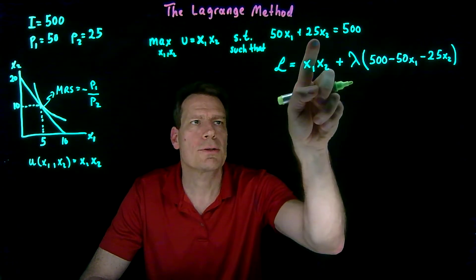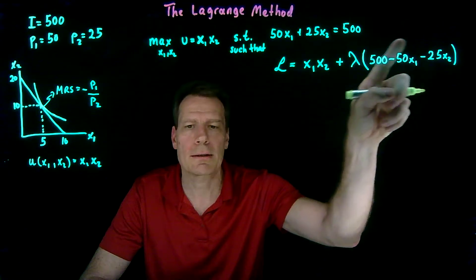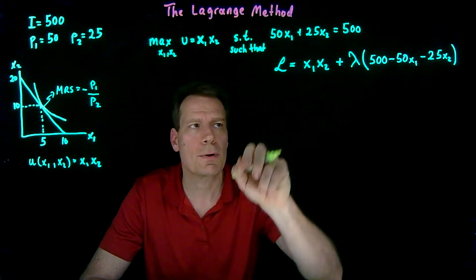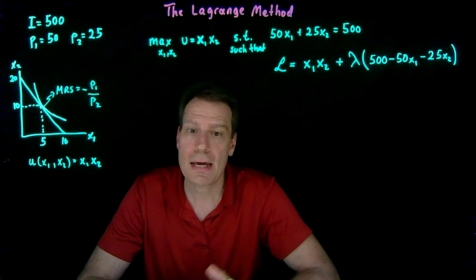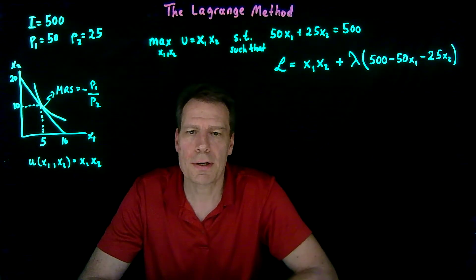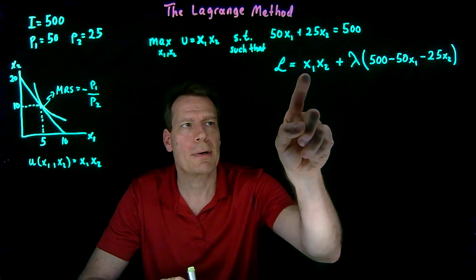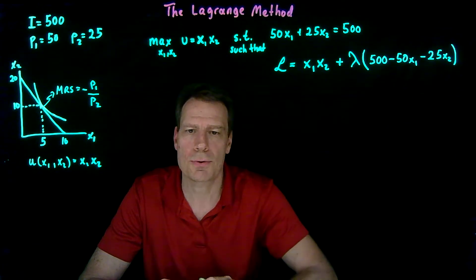So we've just taken these two terms and subtracted them, collected them on one side. So the equation is then equal to zero. And we've taken that part and put it in here. That's it. That's the Lagrange function. The thing you're trying to optimize plus lambda times your constraint.